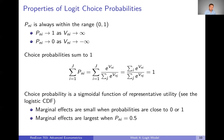There are a couple of nice properties we can see from this expression. First, these choice probabilities are always within the range of zero to one. If a given alternative's representative utility goes to infinity, the probability goes to one; if it goes to negative infinity, the probability goes to zero. Also, the choice probabilities always sum to one — the sum over all alternatives of the numerator equals the denominator. This is exactly what we'd expect if our alternatives are exhaustive and mutually exclusive.